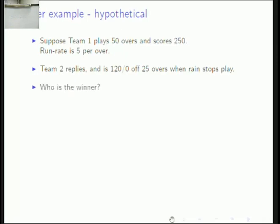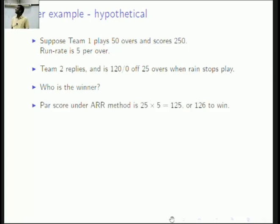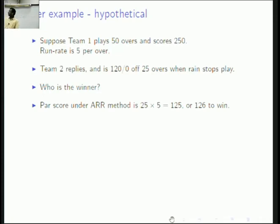Who is the winner? We have to declare a winner because this is one day cricket. Most people say team 2 — because they have all wickets in hand. But according to the Average Run Rate method, team 1 scored at a rate of 5, so 25 times 5 is 125. Team 2 needs to reach 125 — at 120 they are below par, so by the ARR method, team 2 loses.